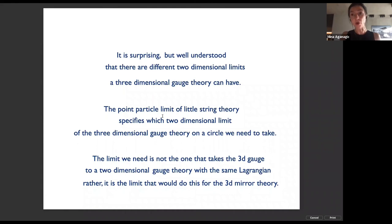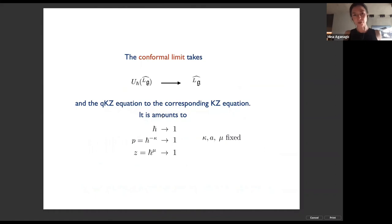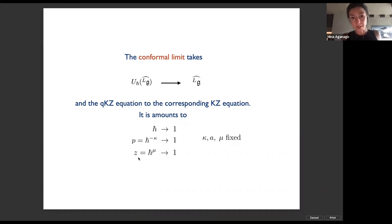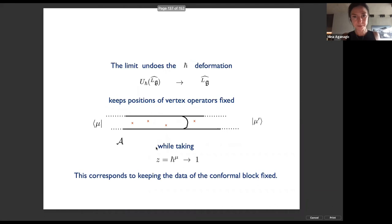The limit we need isn't the obvious one that takes a three-dimensional gauge theory to a two-dimensional gauge theory with the same Lagrangian. Instead it's the obvious two-dimensional limit of the 3D mirror theory. The conformal limit amounts to taking ħ-bar to one and p to one — taking both equivariant parameters to one, keeping the relative rate at which they go to one fixed, that's kappa — and also taking the parameter z — which I call ħ-bar to the μ — to one.